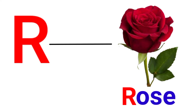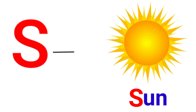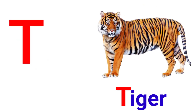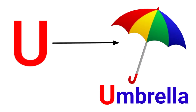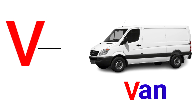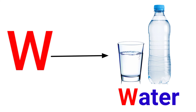R for rose, S for sun, T for tiger, U for umbrella, V for van, W for water.